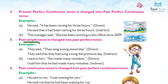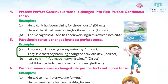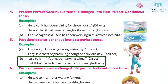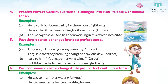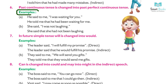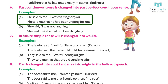Examples for Simple Past → Past Perfect: (a) They said, 'They sang a song yesterday.' (Direct) → They said that they had sung a song the previous day. (Indirect) (b) I said to him, 'You made many mistakes.' (Direct) → I told him that he had made many mistakes. (Indirect) (6) Past Continuous changes to Past Perfect Continuous.